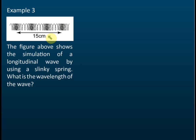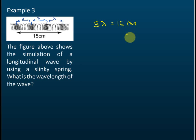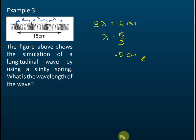From one compression to another compression is one wavelength (λ). From the diagram we can see that three wavelengths equal 15 cm. So 3λ = 15 cm, therefore λ = 15 ÷ 3 = 5 cm. One wavelength, two wavelengths, three wavelengths — equivalent to 15 cm — so the wavelength is 5 cm.